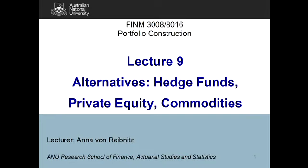Today is the last week of our alternative assets topic. Next week we finish with a look at global investing, which rounds out our look at different asset classes and the type of qualitative decisions you might want to bring into the assignment. The last two weeks look at things like how to implement an investment, governance, and other considerations relevant to portfolio construction. Today we have three different asset classes to cover: hedge funds, private equity, and commodities.